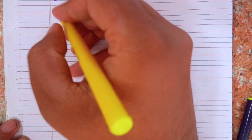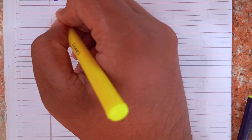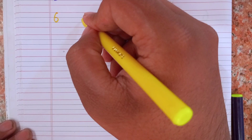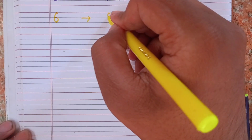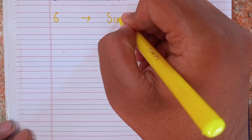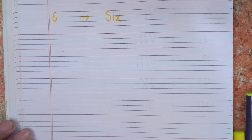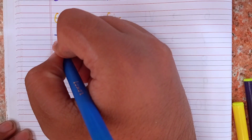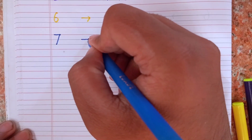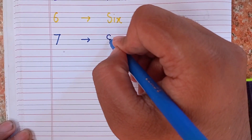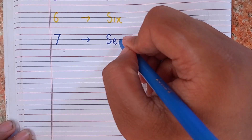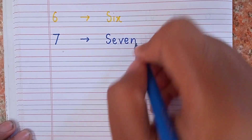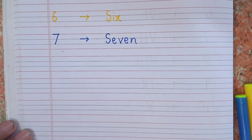Now I am writing 6. This is 6. Now I will write the spelling of 6: S I X. Remember the spelling of 6, S I X. After 6, I will write 7. This is 7 and the spelling of 7 is S E V E N. Remember the spelling S E V E N.